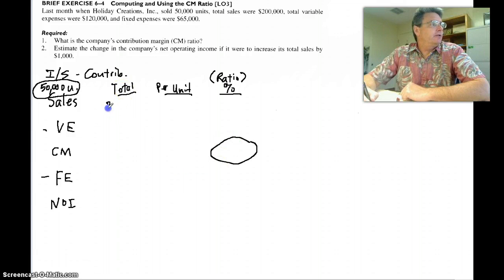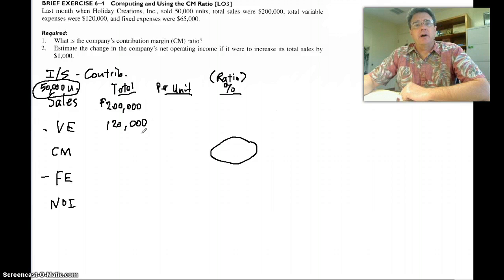Total sales were $200,000. Total variable expenses were $120,000. Fixed expenses were $65,000. That's down here.